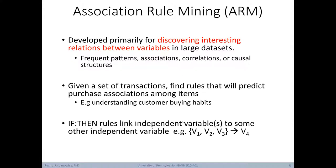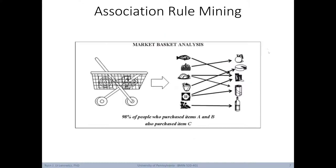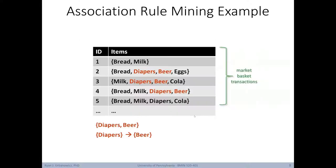The if-then rules that are generated link independent variables to some other independent variable. So maybe if you purchase these three items, you're more likely to purchase this item as well. For example, if 98% of people who purchased items A and B also happen to purchase item C, it might be a good idea for the grocery store to put all three of those items in the same location, either to make it more convenient for the consumer, or to increase the likelihood that they'll buy all three items.